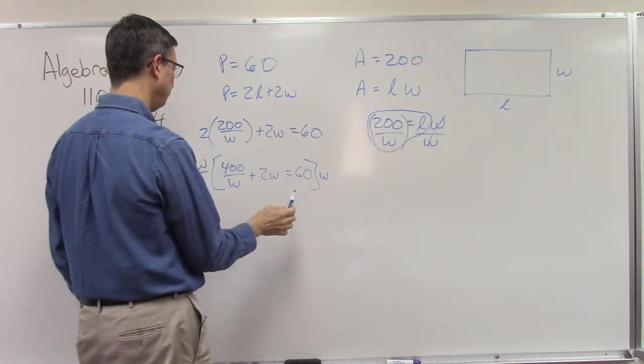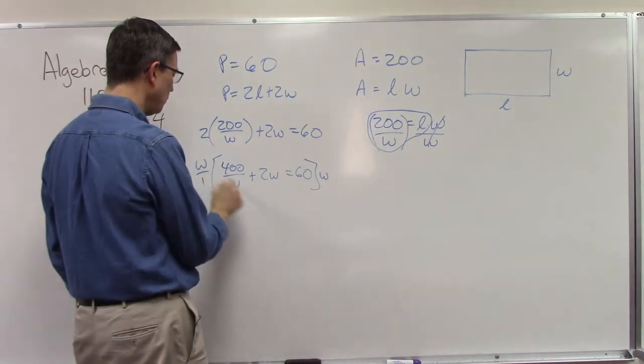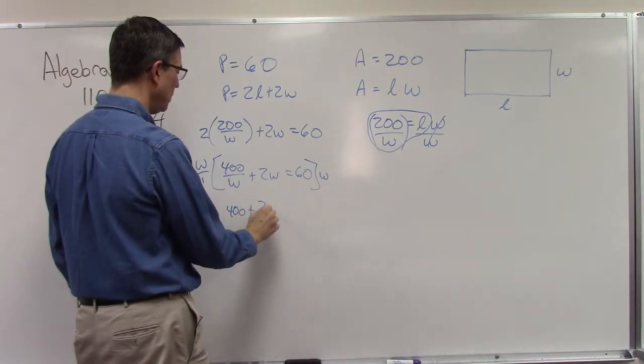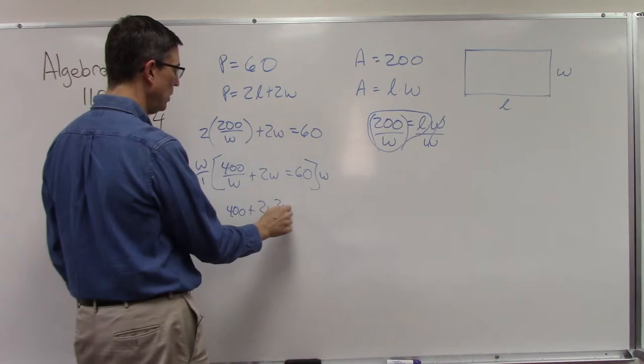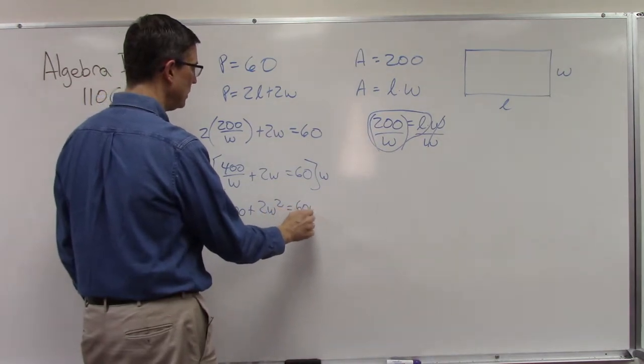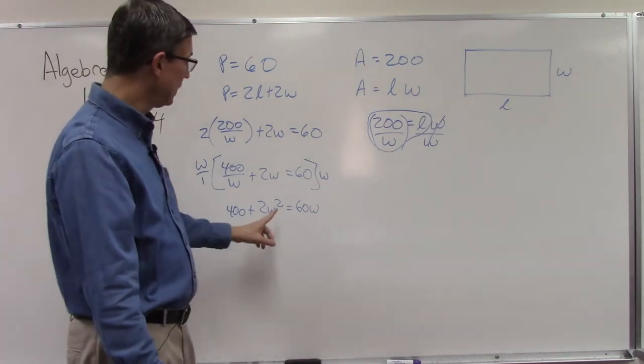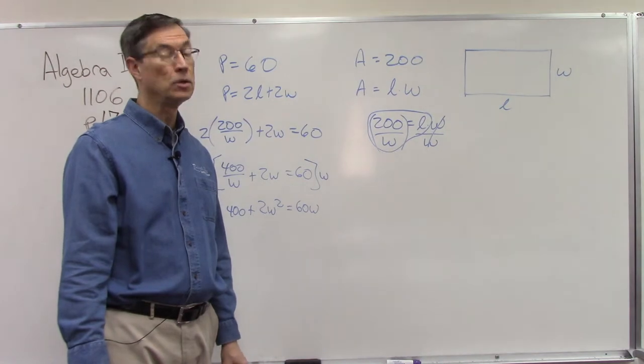So this will cancel and I'll get 400 plus 2w squared, because w times w is w squared, equals 60w. Now we recognize we have a squared term in there, so this is called a quadratic equation.